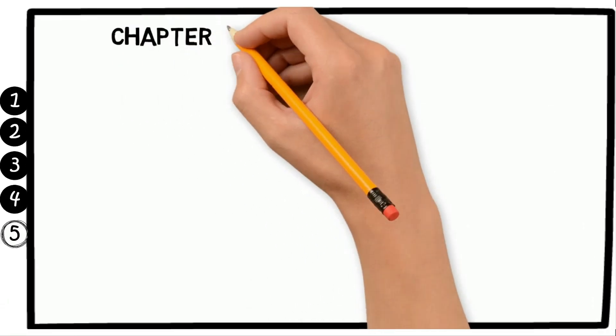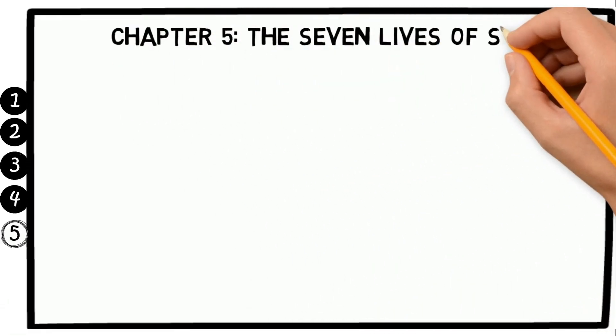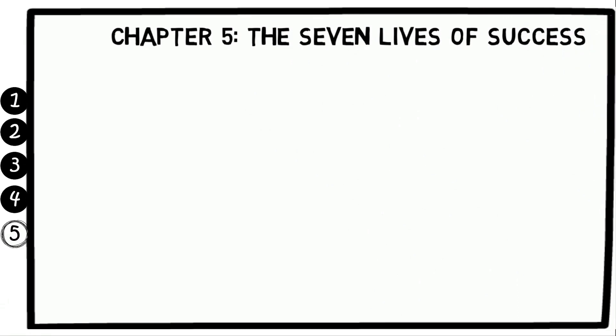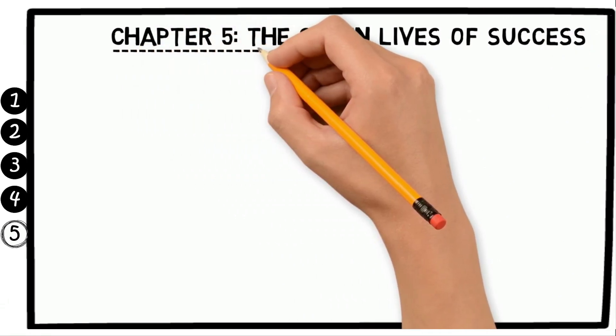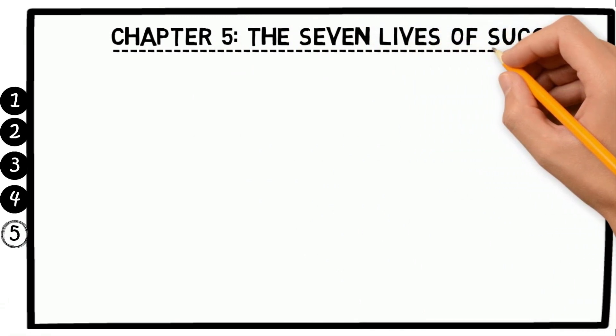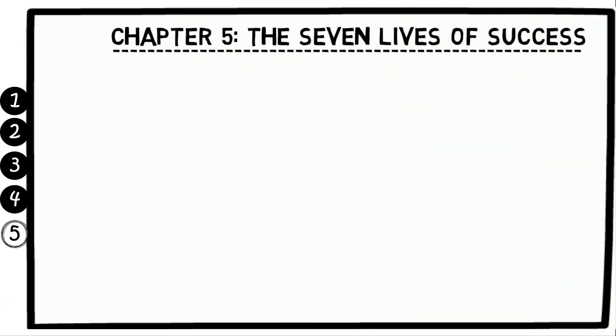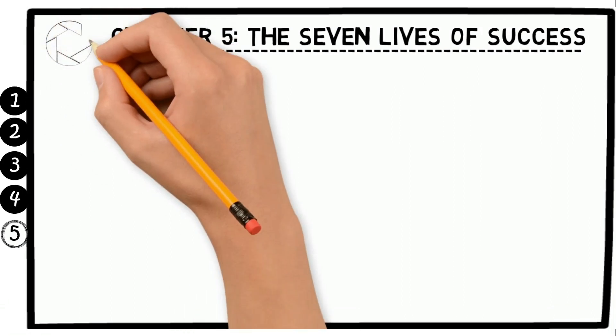Chapter 5: The Seven Lives of Success. In Chapter 5 of Tony Robbins' book Unlimited Power, the author discusses the seven lives of success. In this chapter, Robbins argues that there are seven key areas in which successful people tend to focus their attention.